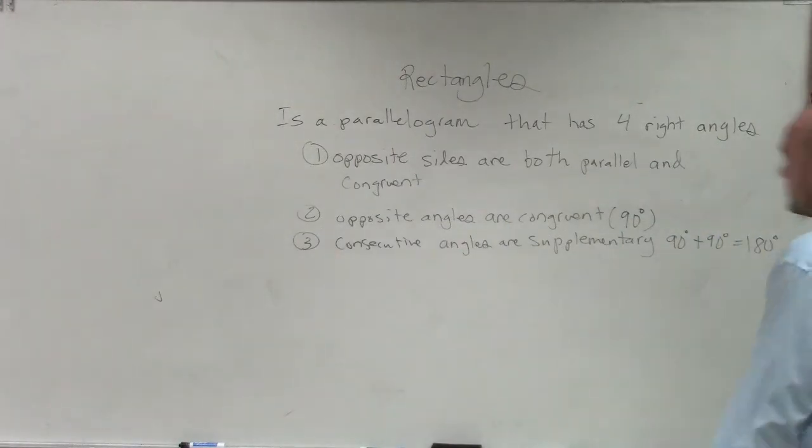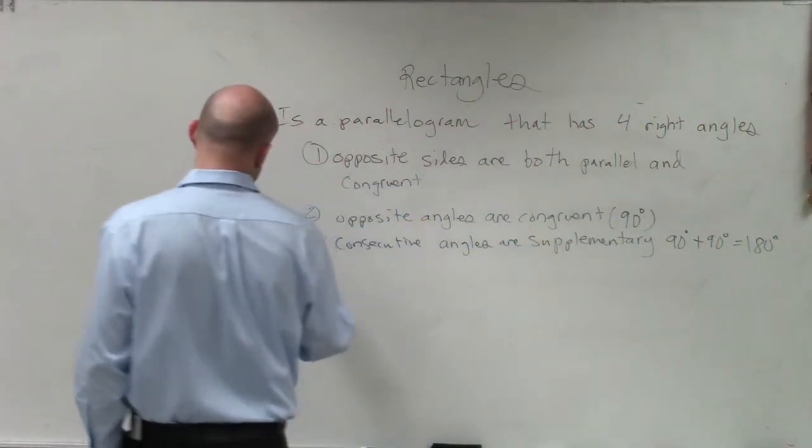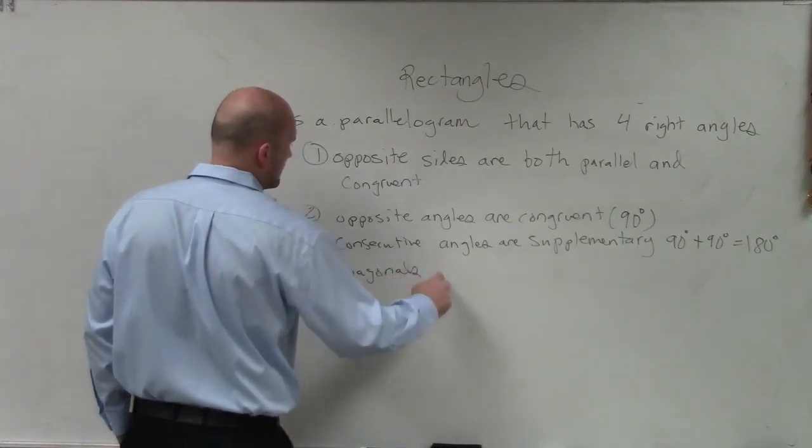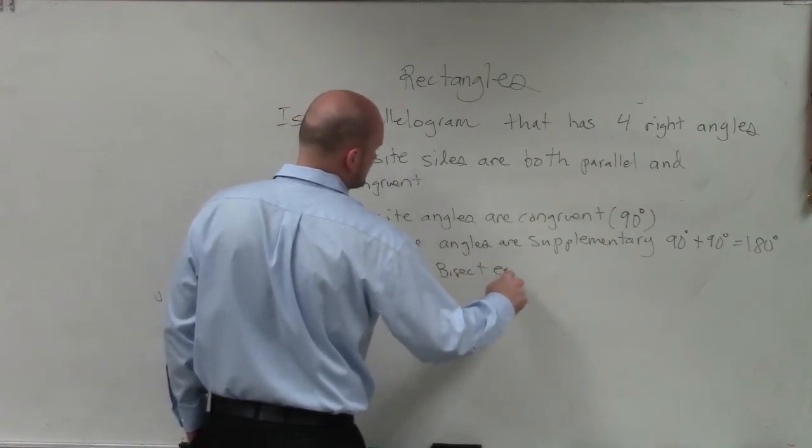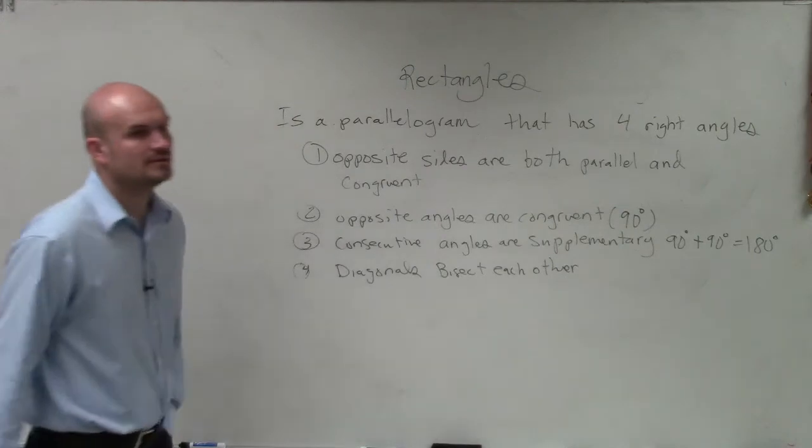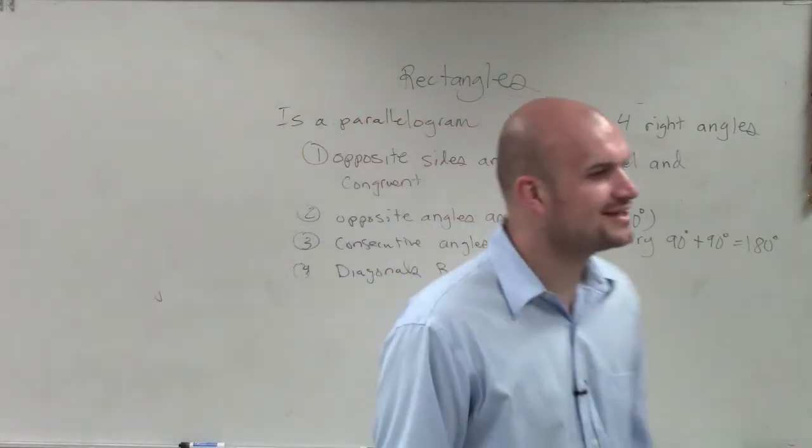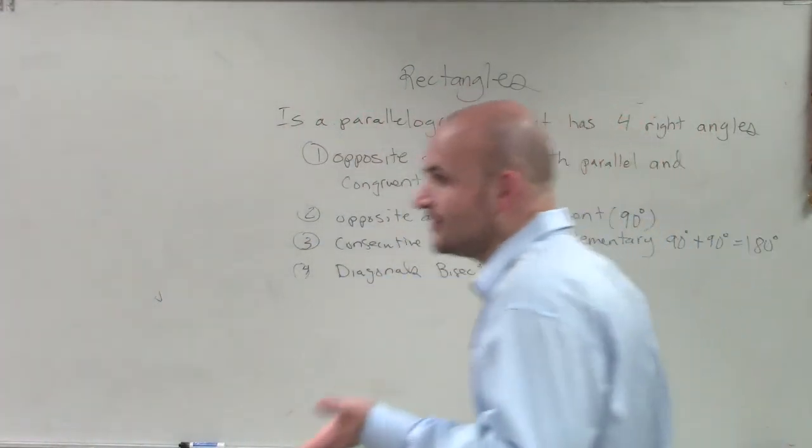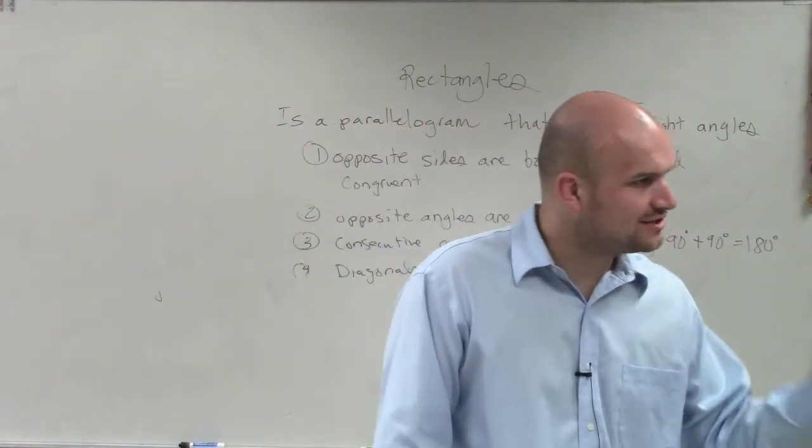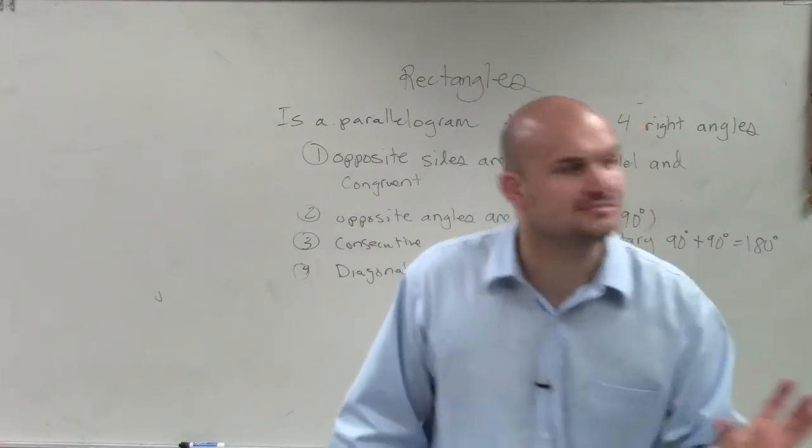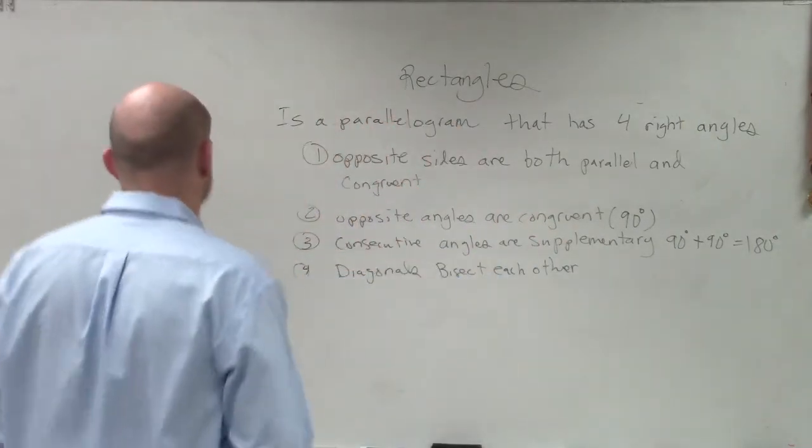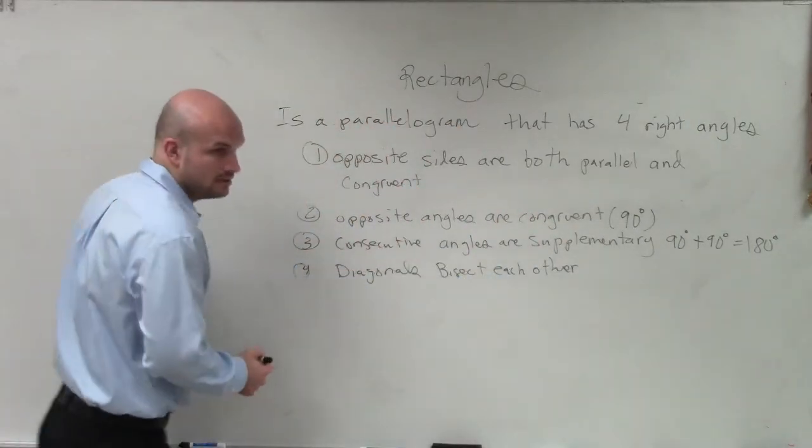What else am I missing? Another one is, question four, that the diagonals bisect each other. Now, this is a very important one for your homework, because you guys know these are going to come in. If they bisect each other, that means they cut them in half. So that means one side of diagonal is equal to the other side. Bisect it. Cuts in half.